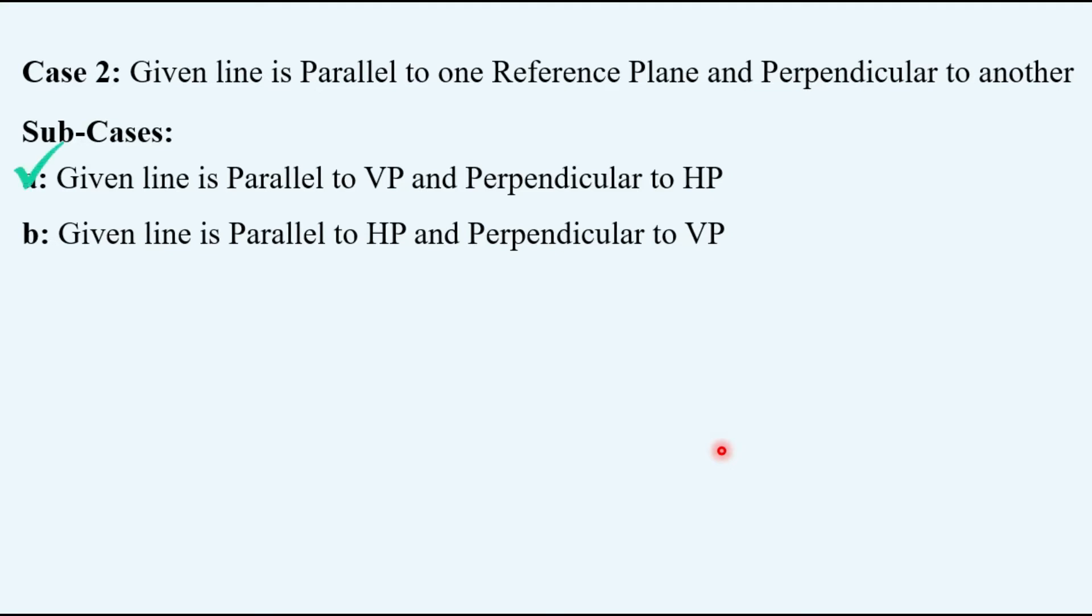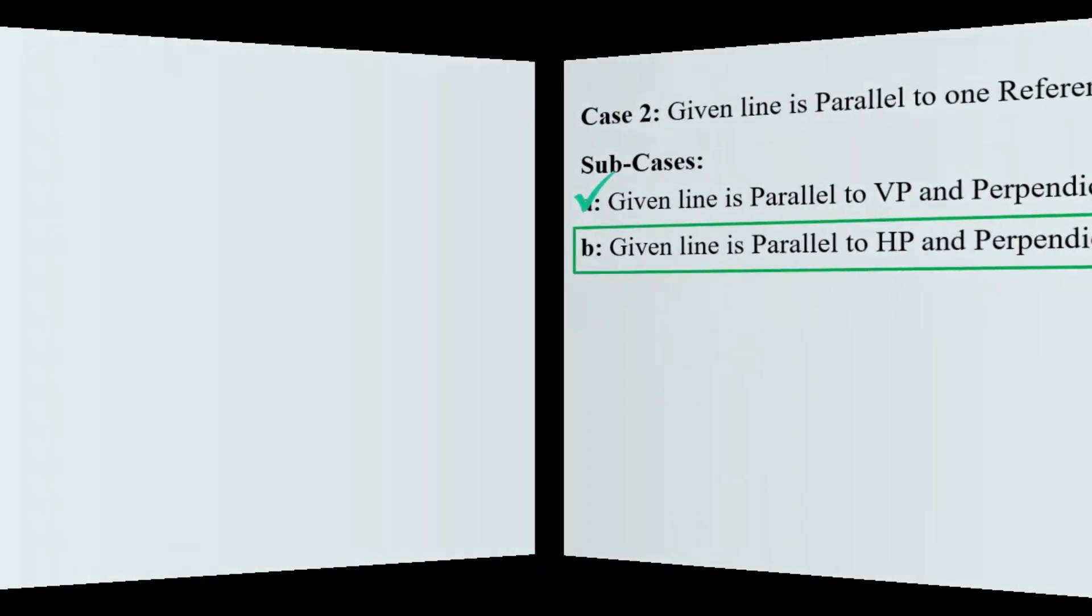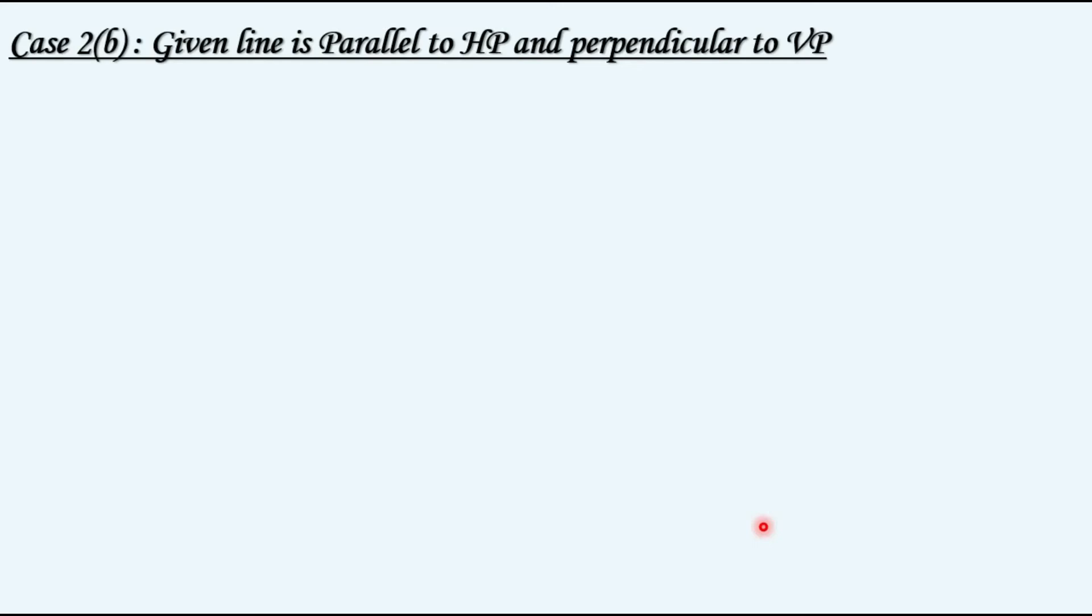In the previous video we discussed sub-case A. Now we will discuss sub-case B in this video. Sub-case B of case number two is when the given line is parallel to HP and perpendicular to VP.